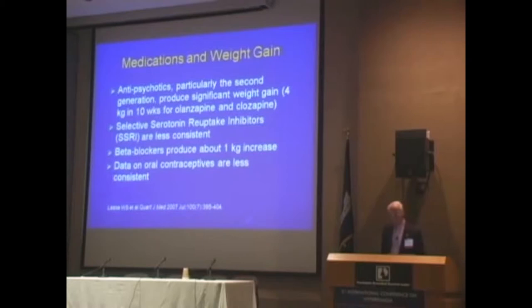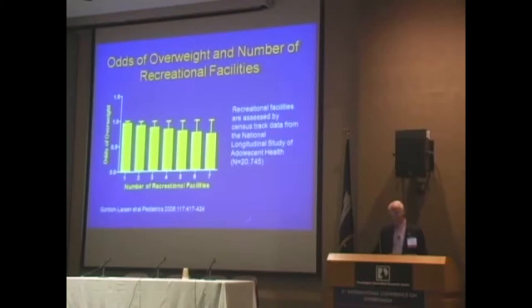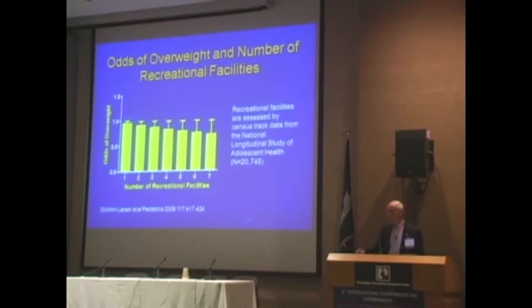The built environment plays a role in how fat kids are. This is the odds ratio of being overweight versus the number of recreational facilities in your neighborhood. The more you have, the greater your odds of not being overweight. So the environment in which people are growing up, whatever their genetic makeup may be, is playing a role.